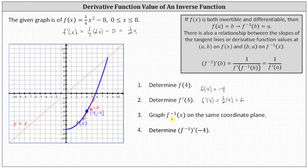Number three, we're asked to graph f inverse of x on the same coordinate plane. Recall if we graph a function and its inverse on the same coordinate plane, they are reflections of one another across the line y equals x, which I've graphed in red. Also, if f of x is both invertible and differentiable, then f of a equals b implies f inverse of b equals a. This indicates if the graph of f of x contains the point a comma b, then the graph of f inverse of x must contain the point b comma a.